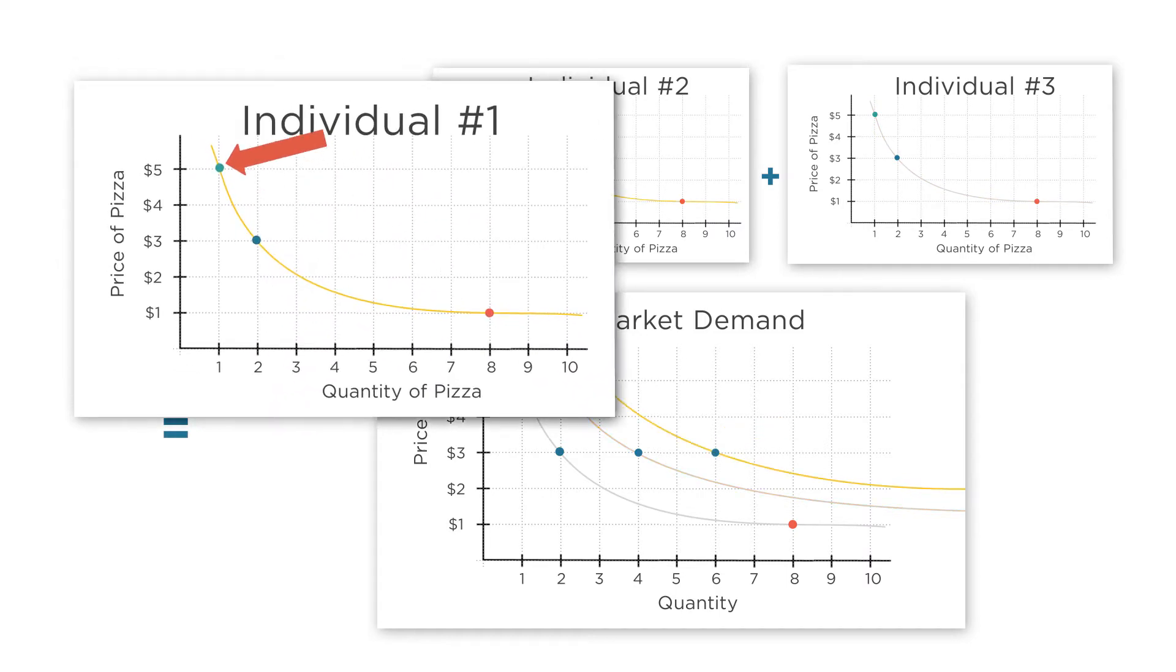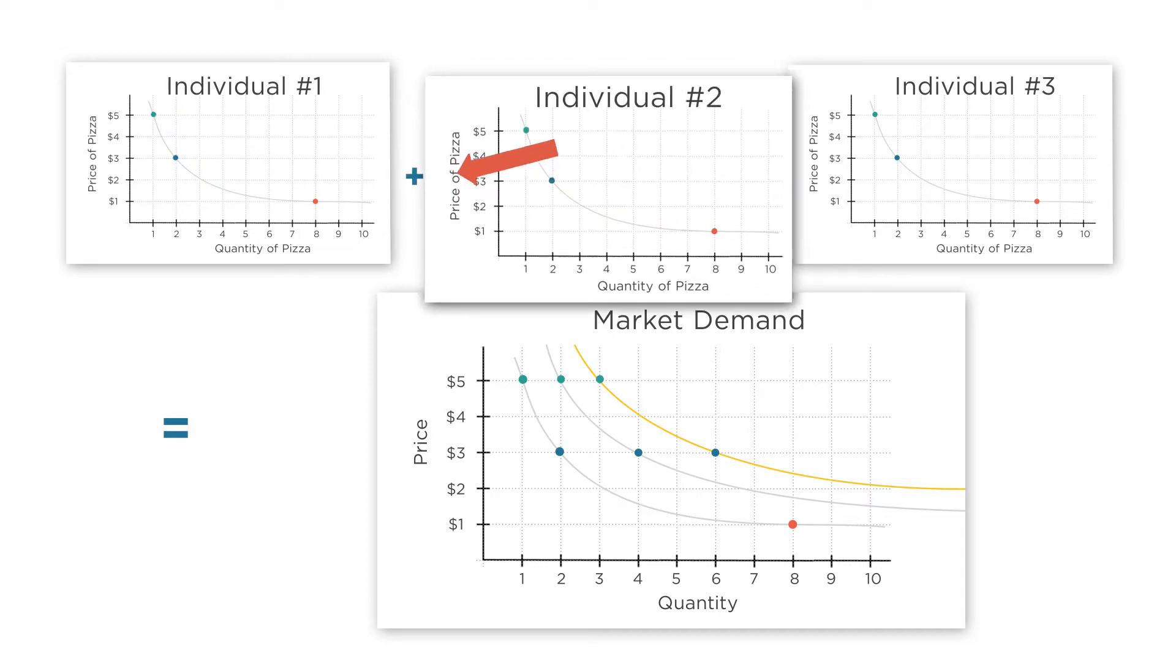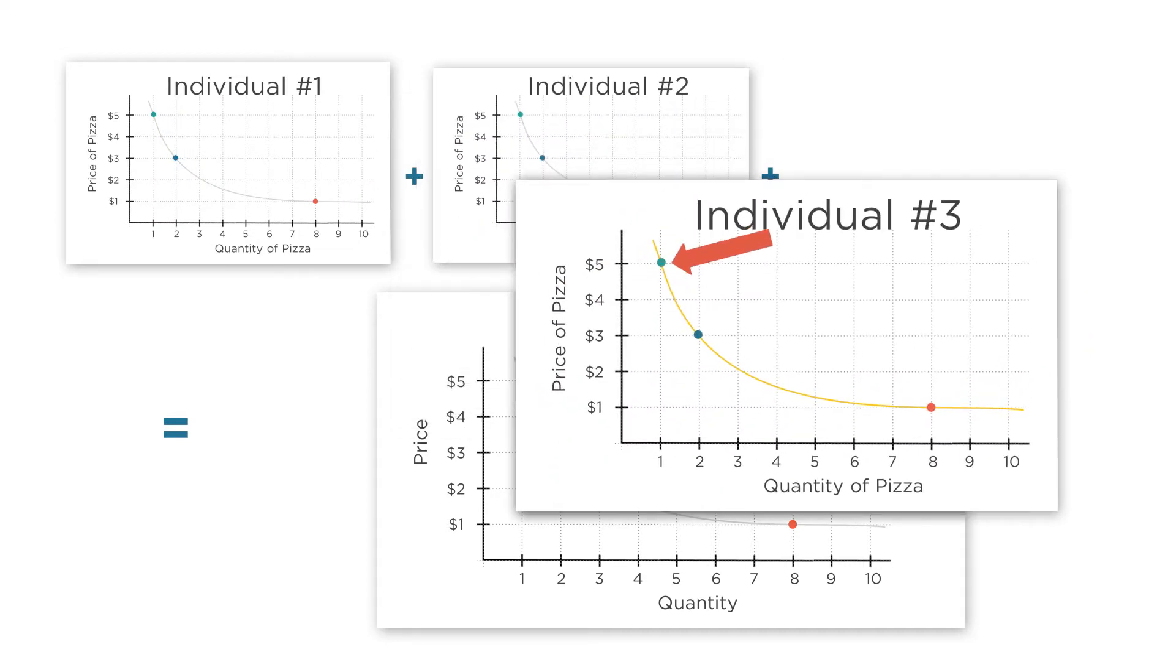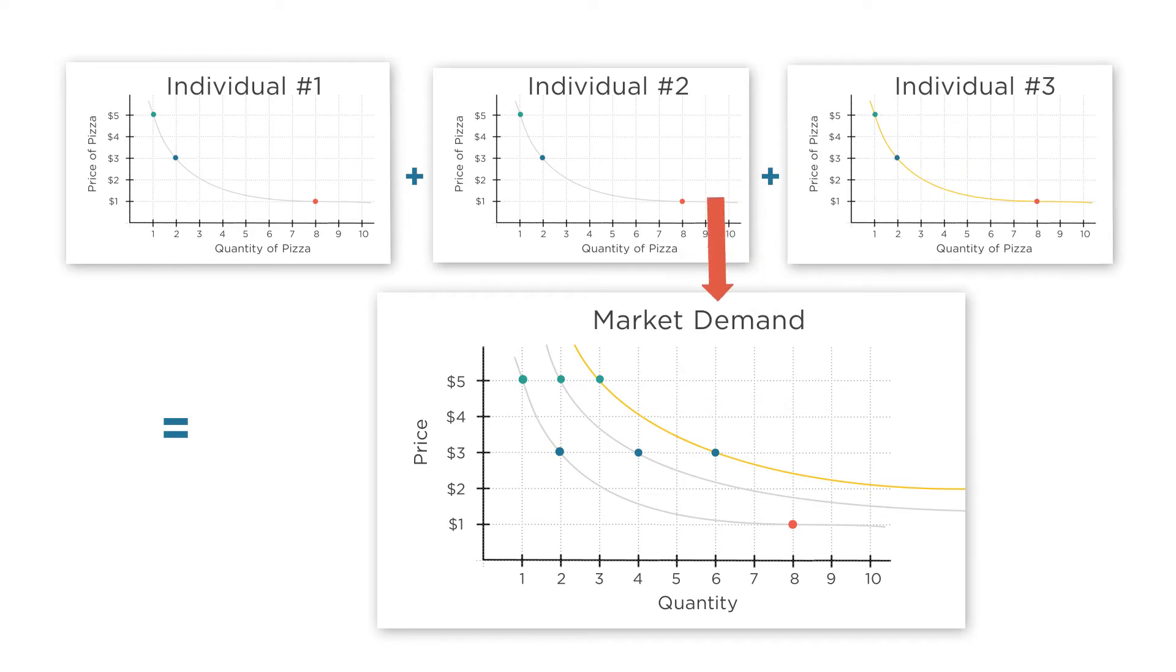At a price of $5, individual 1 has a demand of 1, individual 2 has a demand of 1, and individual 3 has a demand of 1. So in our market of these three individuals, the market demand is 1 plus 1 plus 1 for a total of 3. At a price of $3, each of these three individuals has a demand of 2, so the market demand is 2 plus 2 plus 2, or 6.